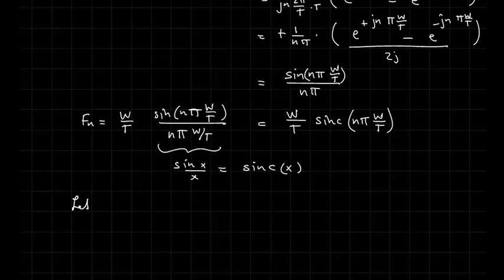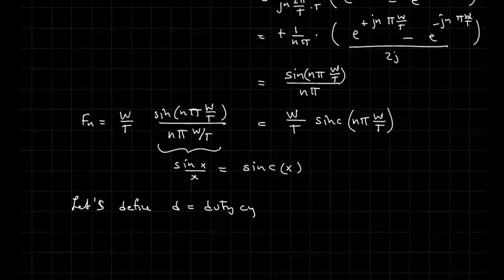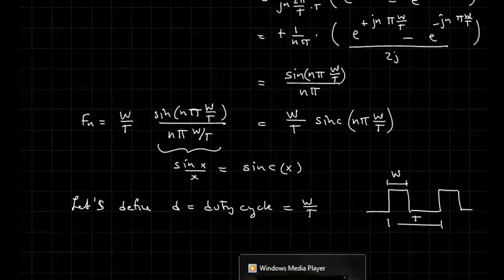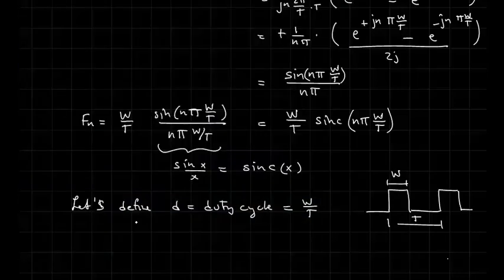Now let's define a variable d, duty cycle, as equal to W over T. So if we have a pulse that has a period, capital T, and a width of W, then the ratio of the width of the pulse to the total period is the duty cycle.